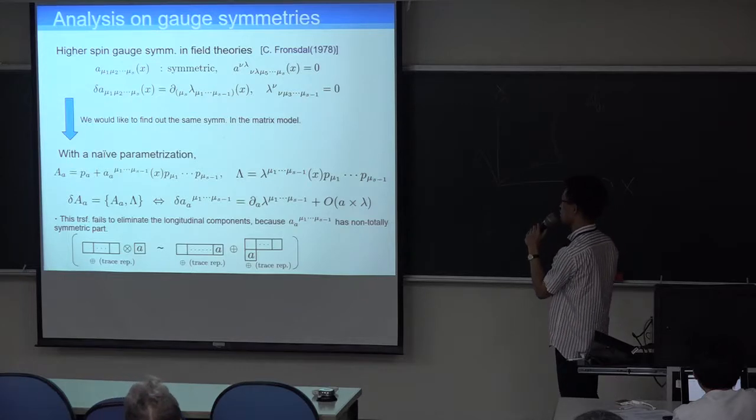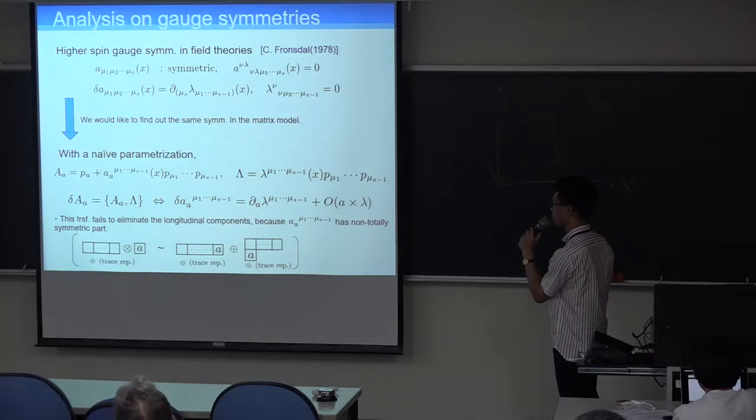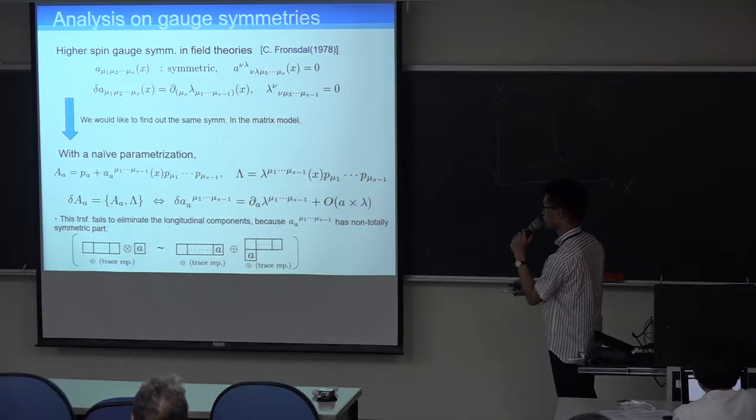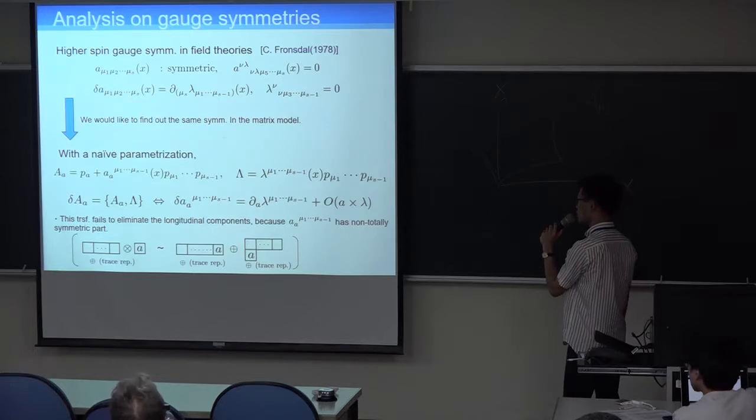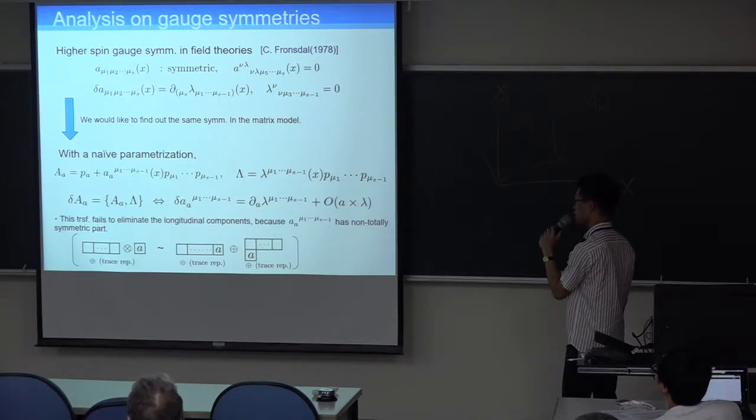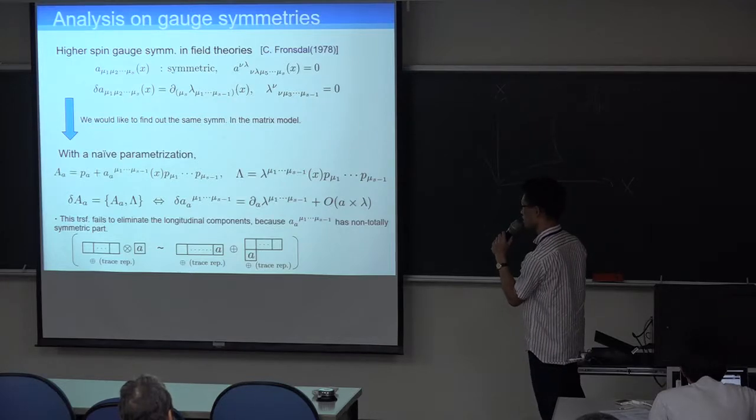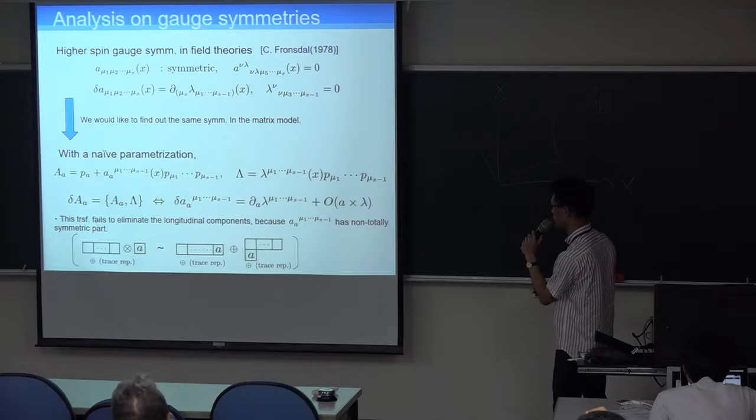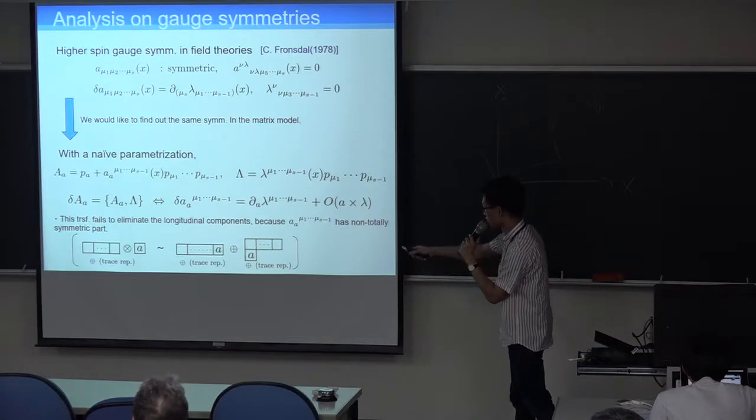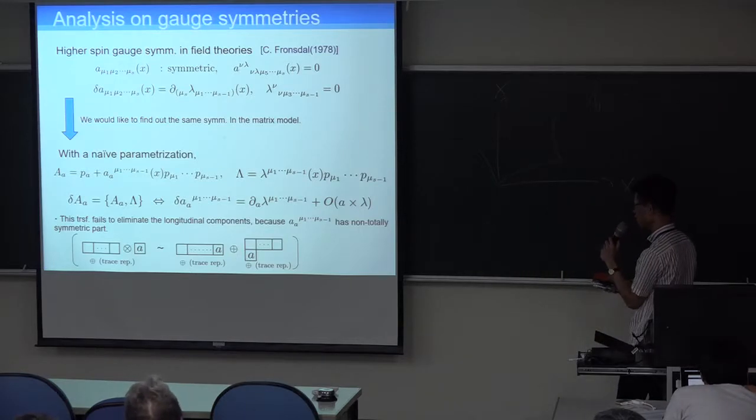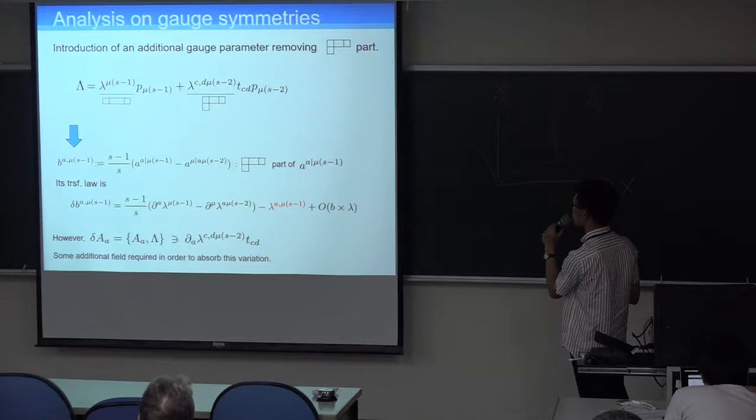And we would like to find out the same symmetry in the matrix model. Because the symmetry has to remove the longitudinal components. With a naive parameterization, we take matrices as a background derivative and the coefficient fields, which has S indices. But these transformations fail to eliminate longitudinal components. Because this coefficient field has no totally symmetric part.